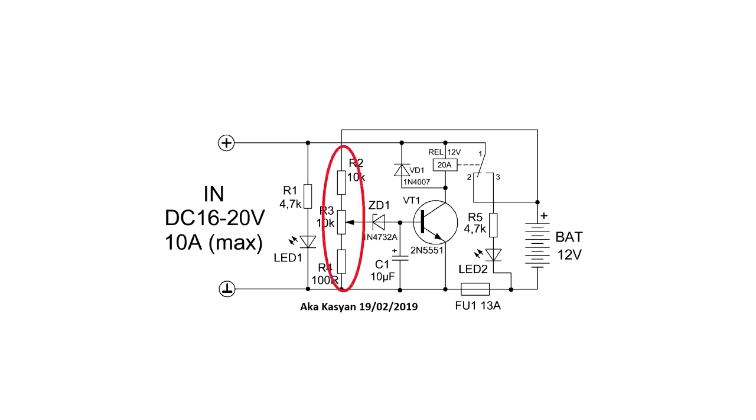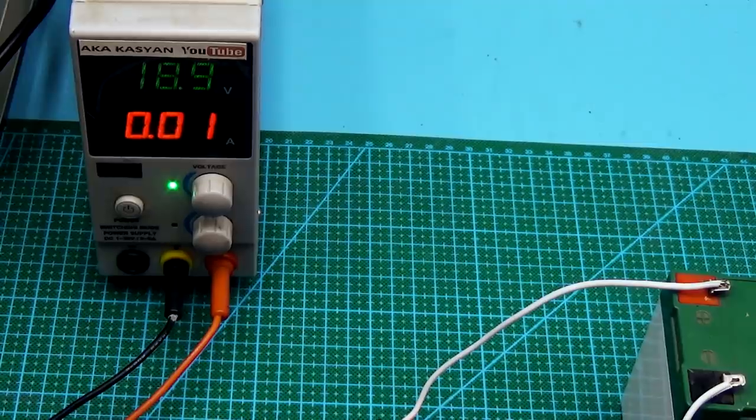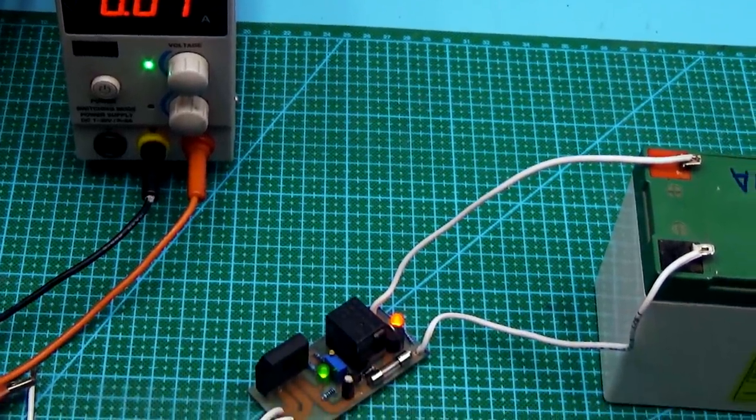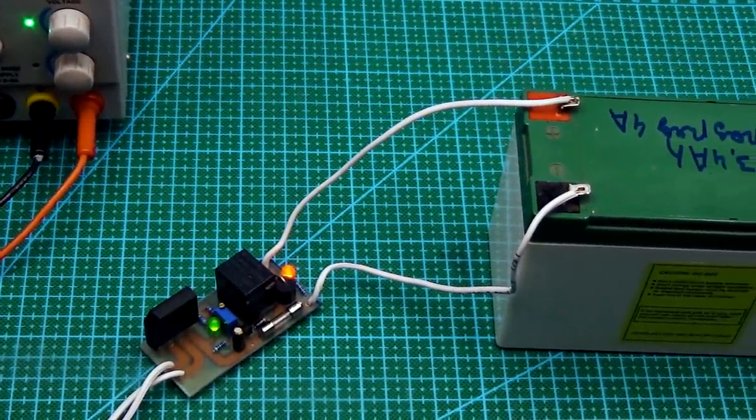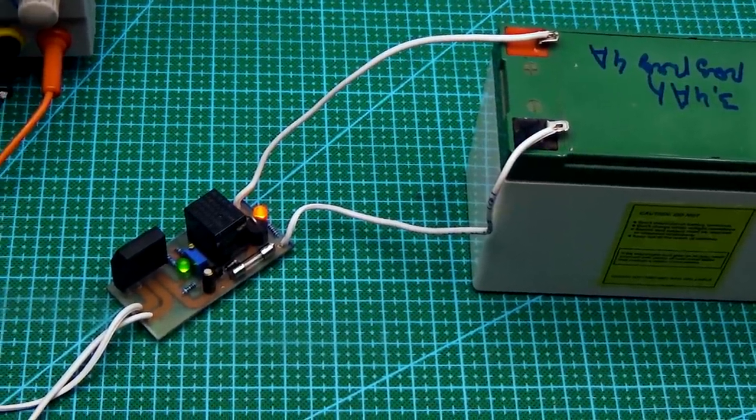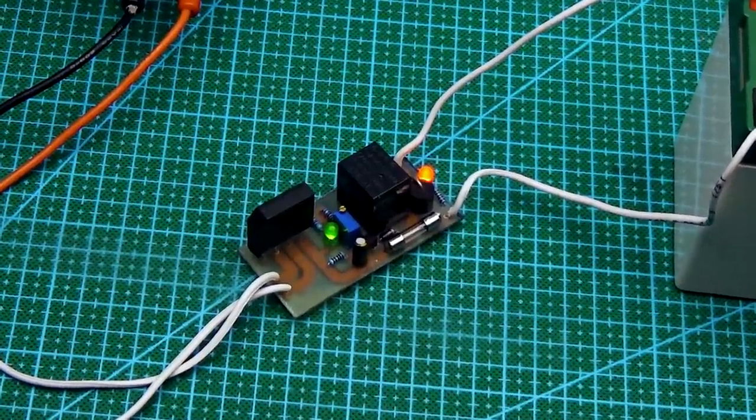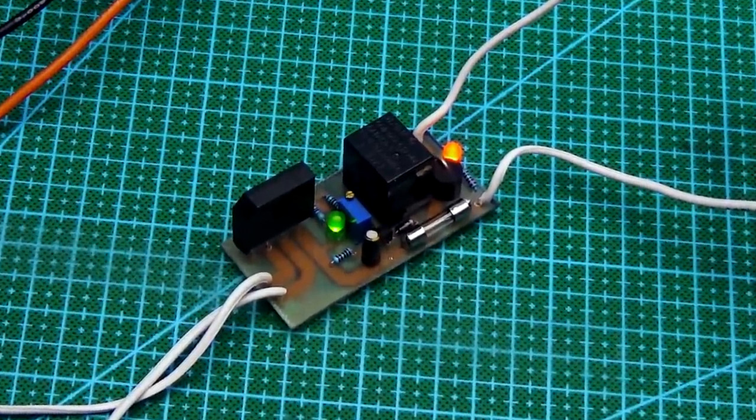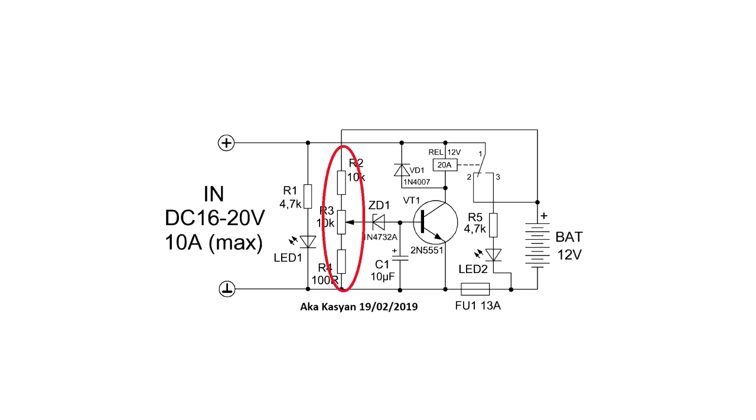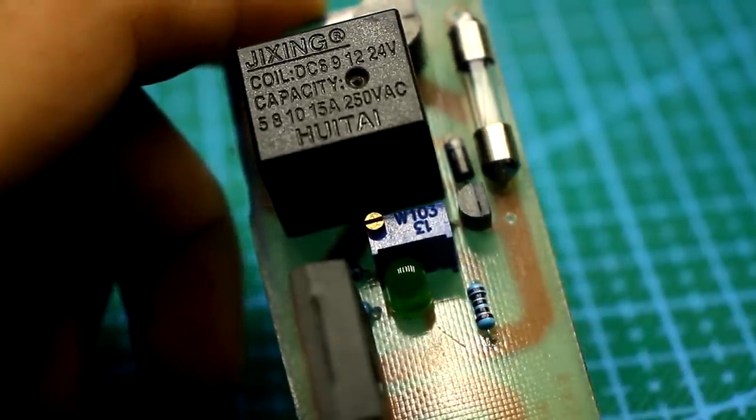Therefore, if the battery being connected to the charger is discharged to a certain value, the circuit will automatically trigger and the charging process will restart. Since the divider is connected directly to the battery, it will discharge it. But the discharge current is so scanty that it can be ignored.